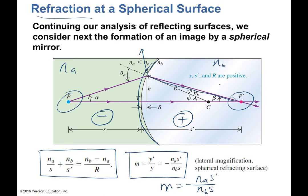If P prime is the image position, S prime is the image distance. S is positive because it's on the same side as the incoming light. S prime is positive because it's on the same side as the outgoing light. R is also positive because it's on the same side as the outgoing light. For refraction at the spherical surface, image distance, radius, and focal length are all positive if the image is in the back.